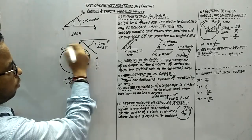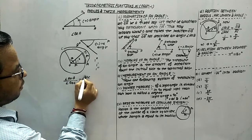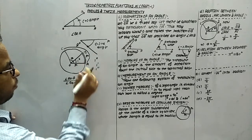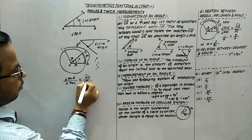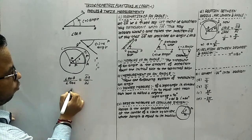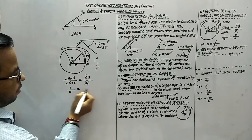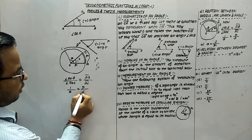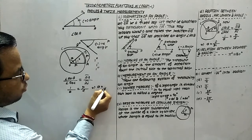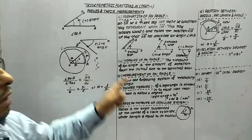Angle AOB corresponds to arc AB, and angle AOC corresponds to arc AC. AOB means one radian, AOC means theta, the arc for one radian is R, and the arc for theta is L. It implies that theta equals L upon R. So this is the way to find the relation between arc length, radius, and angle.